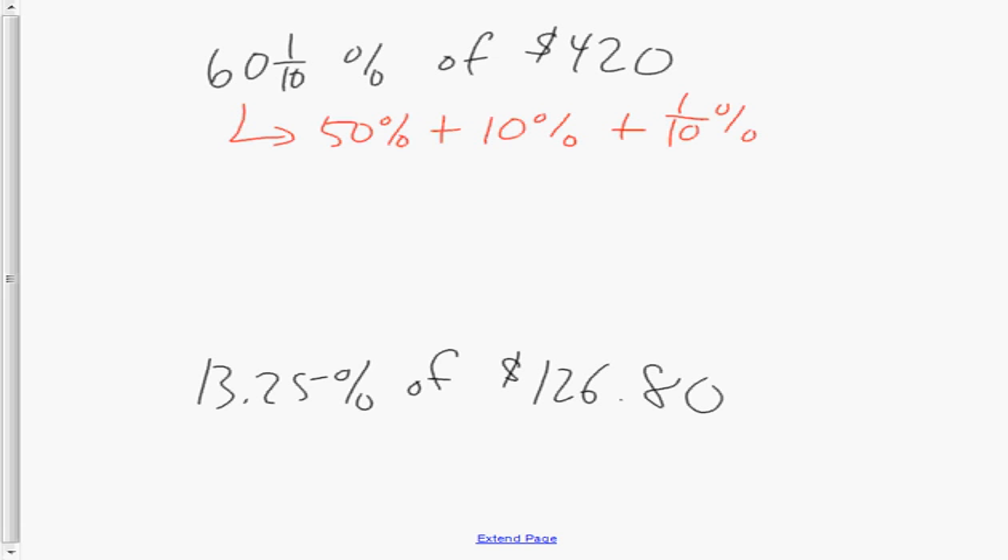So for 50%, that's simply half of a number, so that would be $210. 10%, you simply move the decimal one place. So in $420, you move it one place, you get $42. And for one-tenth of a percent, that's moving the decimal three places. That's your new learning for grade 8. So if it's here, and you move it 10%, 1%, a tenth of a percent, you would know that a tenth of a percent is 42 cents.